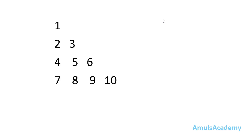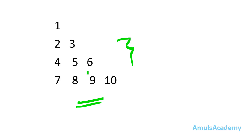Hello guys and welcome to Python programming tutorials by Amuls Academy. Today we are discussing a pattern program — how we can print numbers in a right triangle shape. This pattern is also called Floyd's triangle, named after Robert Floyd. Floyd's triangle is a right angle triangle of natural numbers.